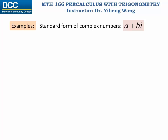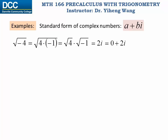Let's look at some examples of complex numbers. First we have the square root of negative four. Before we were not able to evaluate it because we couldn't find the real root for negative four — we would call this undefined. But now since we have defined the imaginary unit, the square root of negative four equals the square root of four multiplied by negative one, which is the square root of four times the square root of negative one. Since the square root of four is two, and the square root of negative one is i, therefore this is 2i, or zero plus 2i in standard form. This is a pure imaginary number because the real part a is zero.